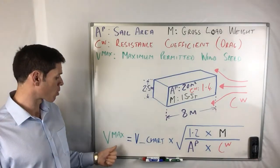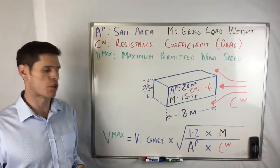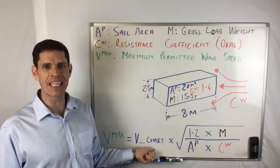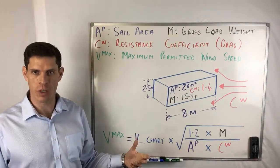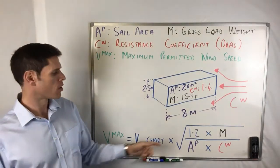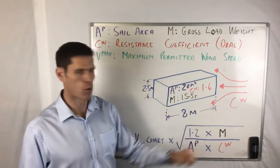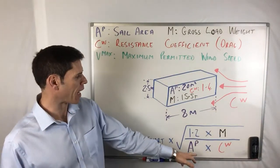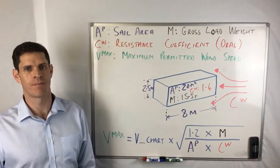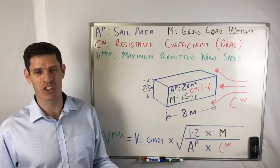So what we're trying to work out is this V max, the maximum permitted wind speed. The way to do the calculation is we take the V chart value, so the maximum wind speed given in the load charts, and we're going to multiply that by the square root of 1.2 times the load weight divided by the sail area times the resistance coefficient. Seems complex? Yes. It isn't actually, as long as you've got a square root function on your calculator, the little tick, then you're going to be fine.